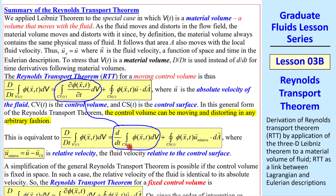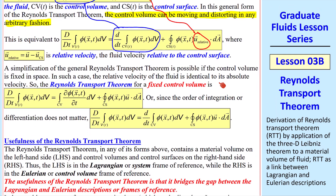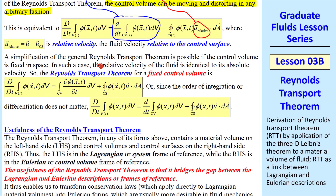There's an equivalent form where the control volume integral is written with the integral and derivative reversed. But if you write it that way, u is now the relative velocity, not the absolute velocity. Relative velocity is given here as u minus u of the control surface — the fluid velocity relative to the control surface. A simplification is possible if the control volume is fixed in space: then the relative velocity is identical to the absolute velocity. So the Reynolds Transport Theorem for a fixed control volume is given here, where CV and CS are no longer functions of time, and we can switch the order of integration and derivative directly.